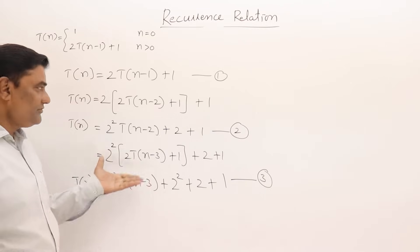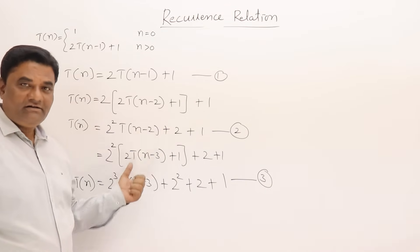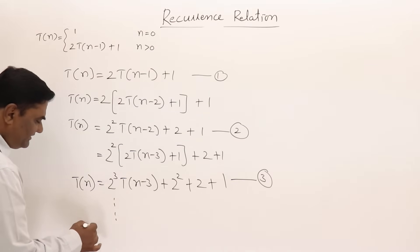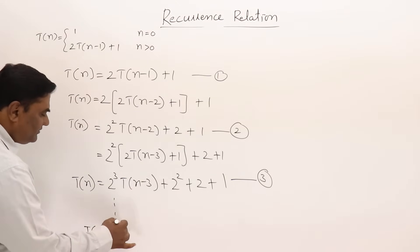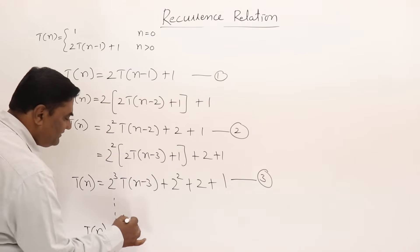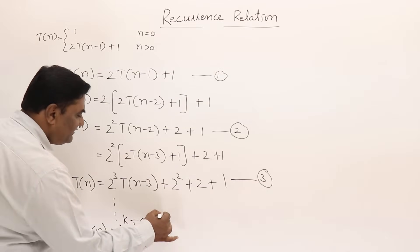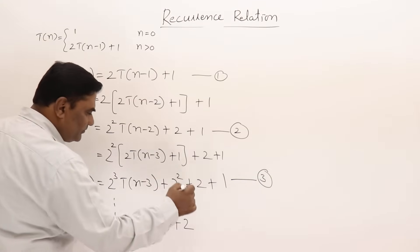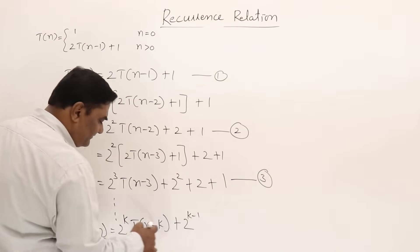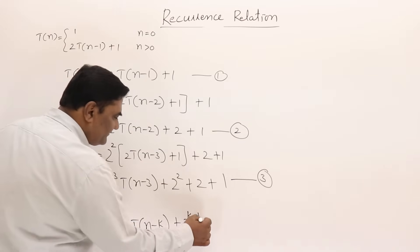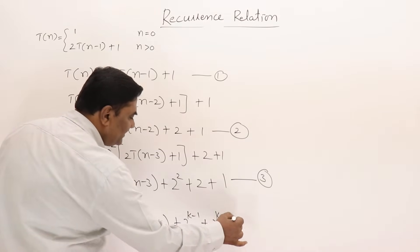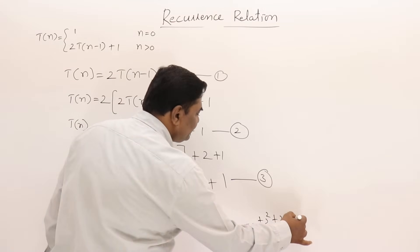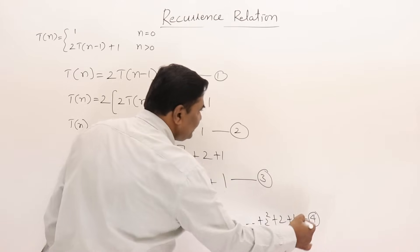Again substituting T(n−2): we get 2³T(n−3) + 2² + 2 + 1. That is the third equation. Continuing this for k times, T(n) = 2^k · T(n−k) + 2^(k−1) + 2^(k−2) + ... + 2² + 2 + 1.